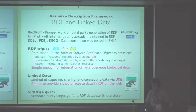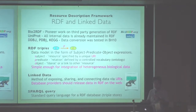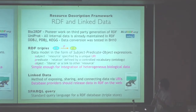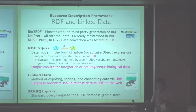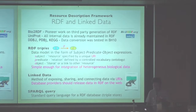During the previous Biohackathon in Japan, DDBJ, PDBJ, and the KEGG project also tried to convert their data into RDF format. So what is RDF? RDF is a very simple data model in the form of subject, predicate, and object, where the subject is specified by a URI and the predicate shows the relation between subject and object. It is simple enough for integration of heterogeneous datasets. Linked data is a method of exposing and sharing these RDF resources on the web, and our message was that database providers should release their data in RDF format on the web themselves.